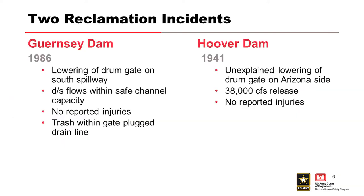The two incidents being referred to: at Guernsey Dam in Wyoming, one of the two drum gates at the south of the spillway opened. This was caused because a painting contractor left trash inside the gate, and that trash eventually plugged the drain line. If the gate couldn't drain, water started collecting inside the drum gate — it gets heavier, loses its buoyancy, and sinks back down into the sill. Since most of these gates are part of a riverine structure, the channel capacity is much higher than the outflow through a single gate, so there was no life loss associated with it.